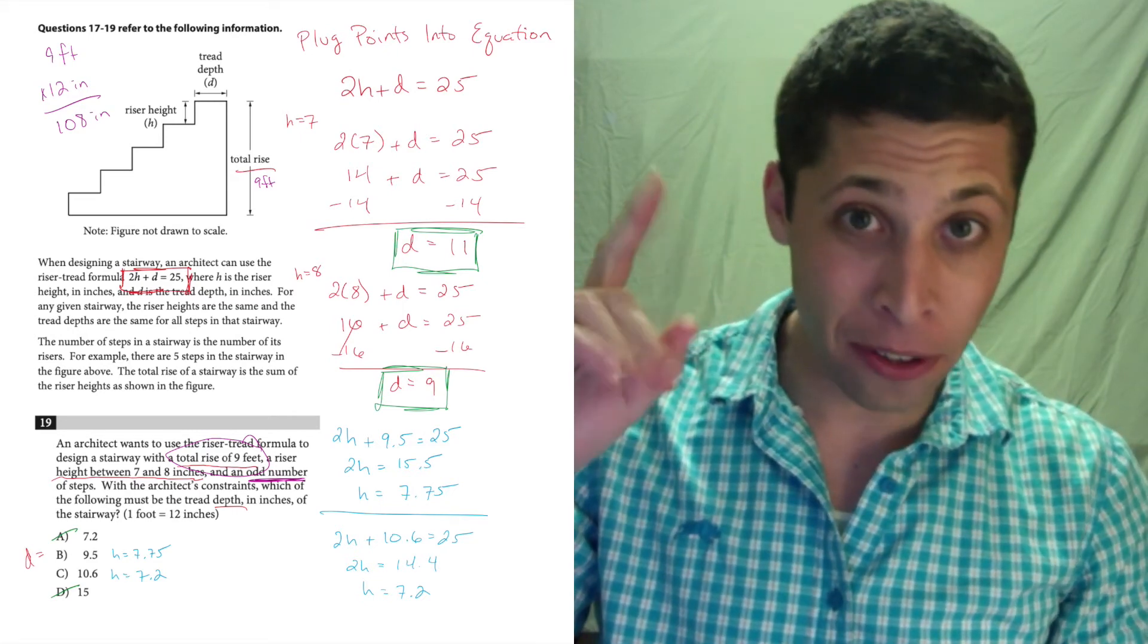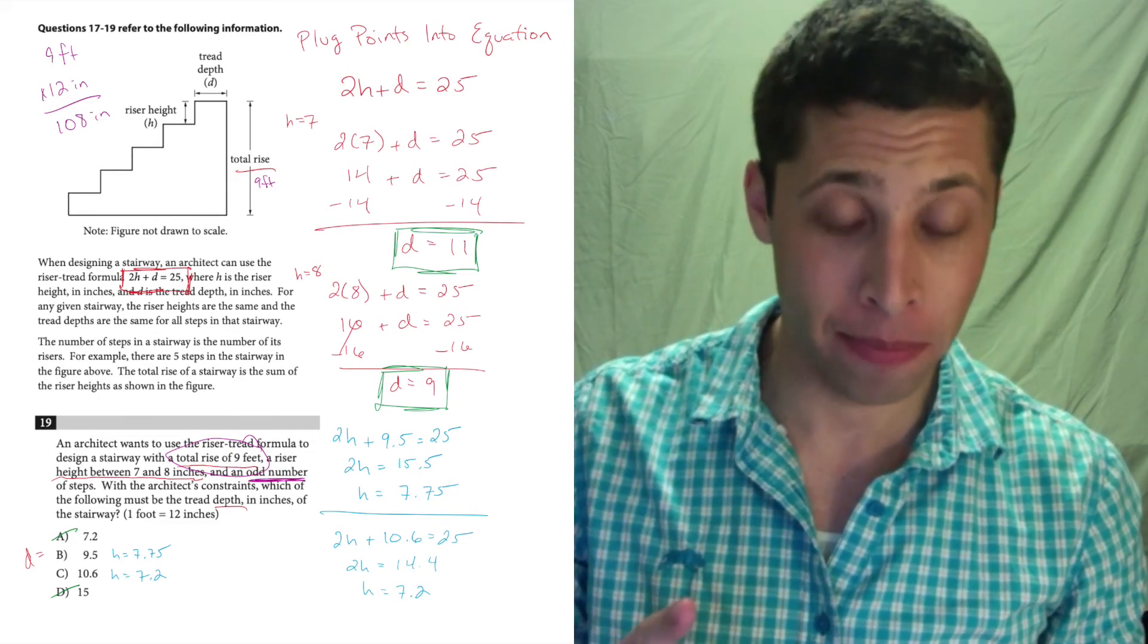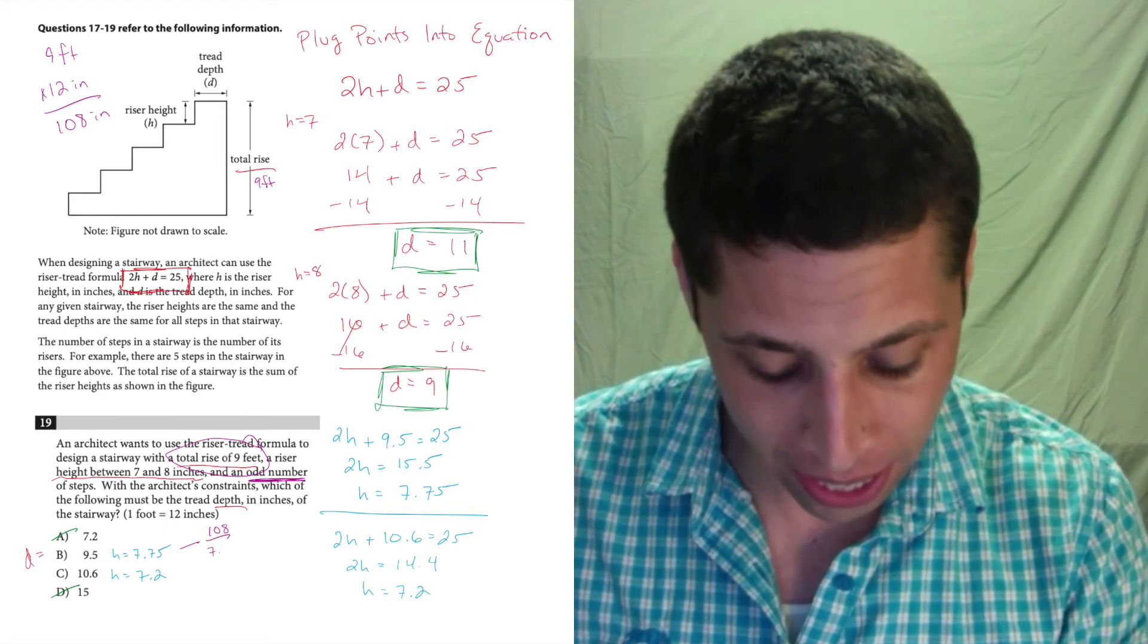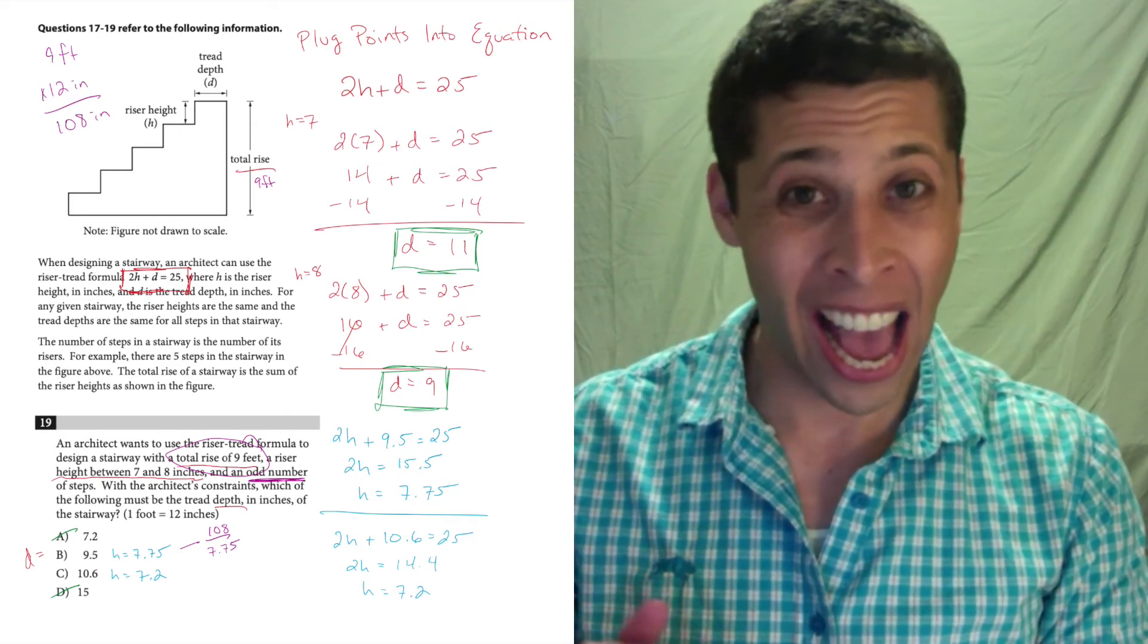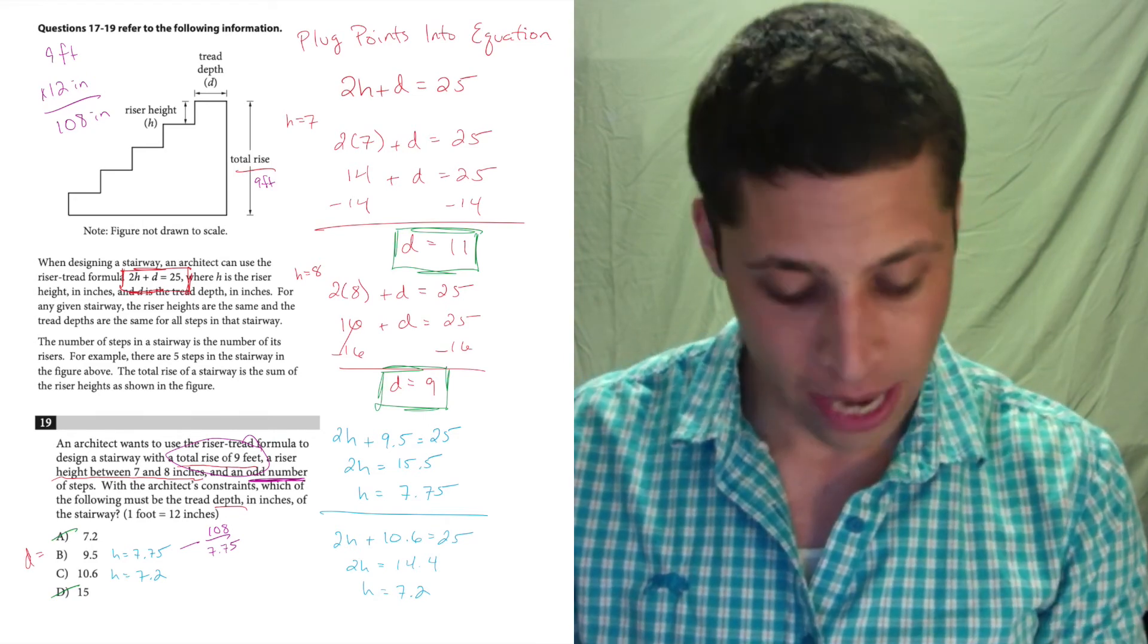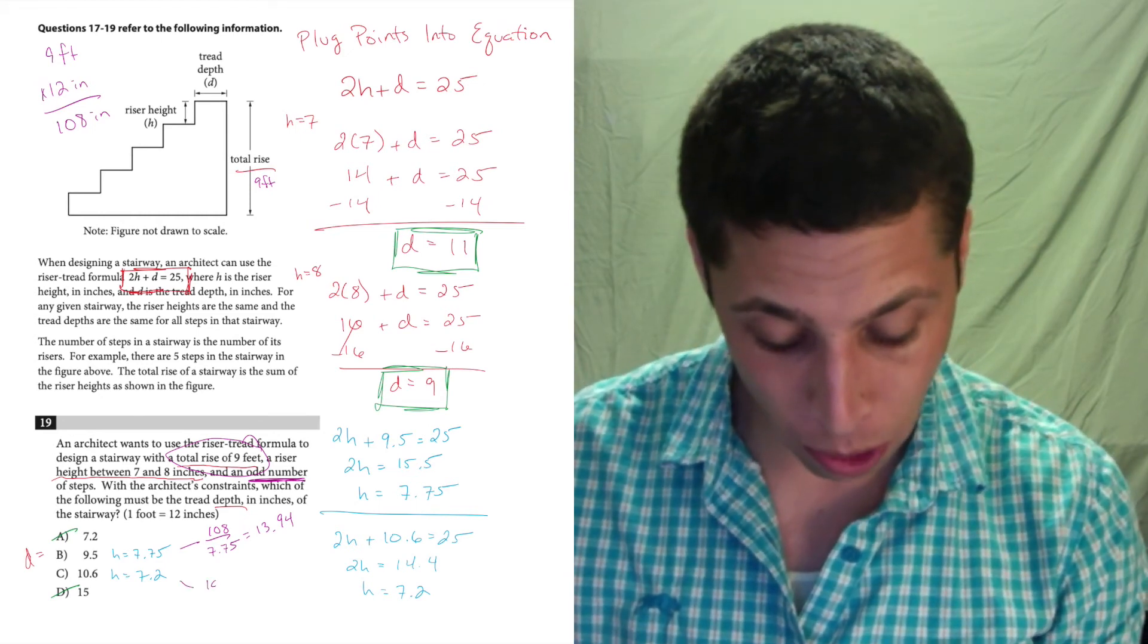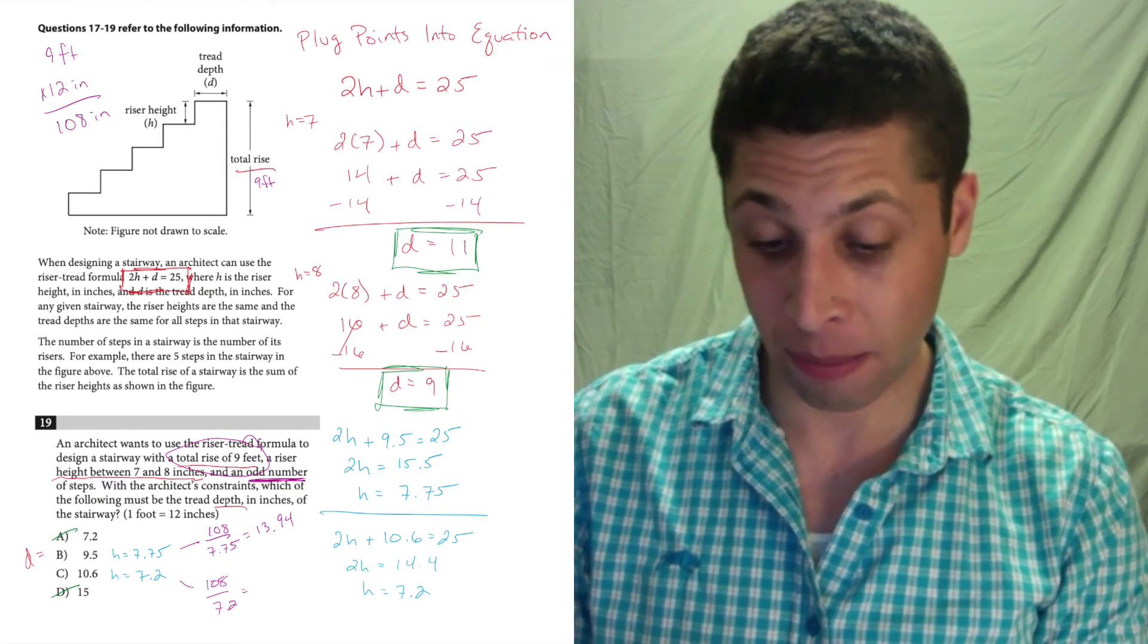So I have 108 inches of total rise and a bunch of steps in there, and each step either has a height of 7.75, choice B, or 7.2, choice C. So what I would do right now is I would take my 108, my total rise, and divide it by the height of one step as calculated for each choice. How many steps does that give us? 108 divided by 7.75 is a weird number, 13.94. Let's see what happens if we do that for choice C. 108 divided by 7.2. That's an even number, 15.